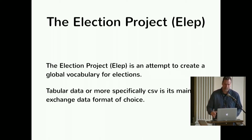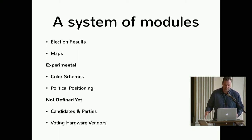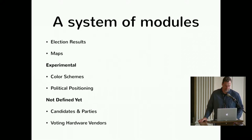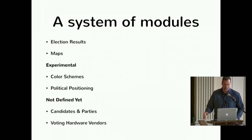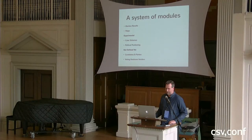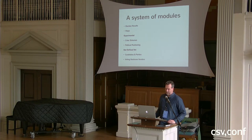The format is CSV. And we thought about a system of modules where we have the election results, maps — that's what we are doing right now. But also some more experimental stuff, like color schemes, political positioning, candidates, parties, money in regards to candidates — something the Federal Election Commission does. Also hardware vendors, voting hardware vendors, and stuff like that.